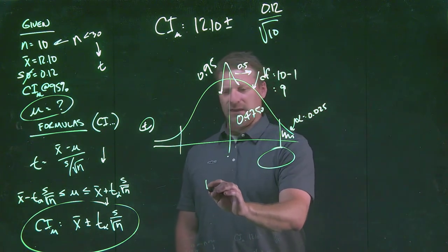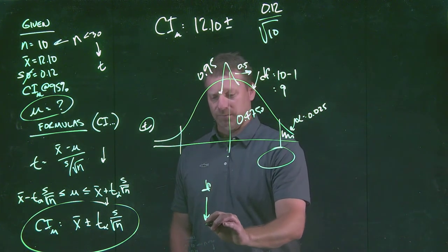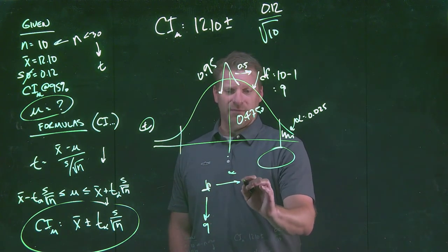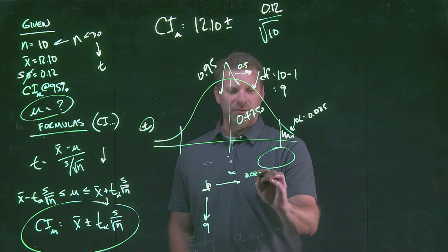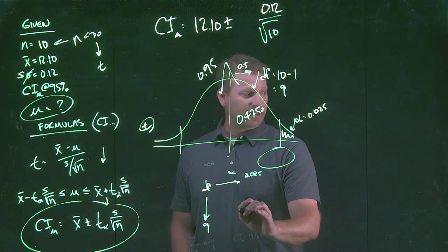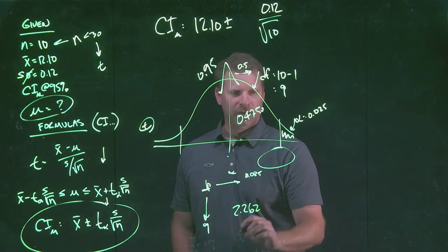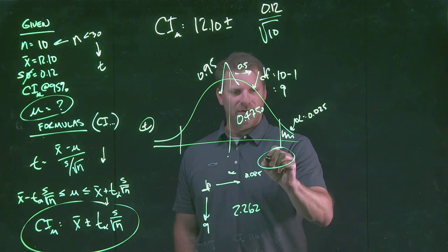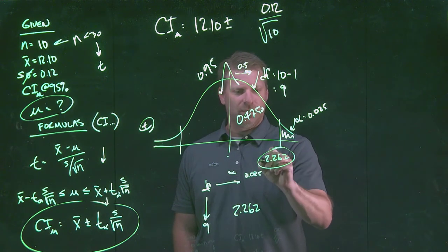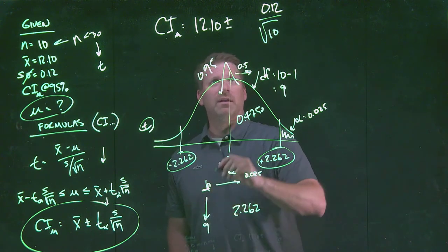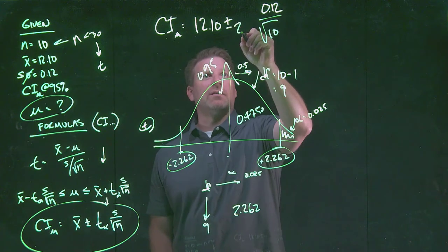If we then go literally, on our table that we're using for class, we go down to nine degrees of freedom. And in terms of our alpha, we go over to 0.025. The intersecting value that we're going to get from our table is 2.262. That's going to be this value here, 2.262 positive, negative 2.262. That's the value that goes into our calculation up here.